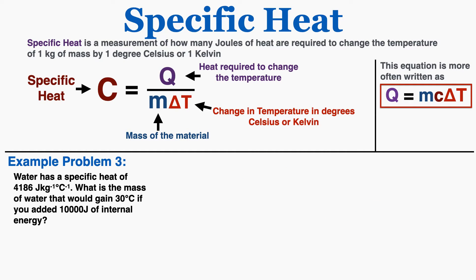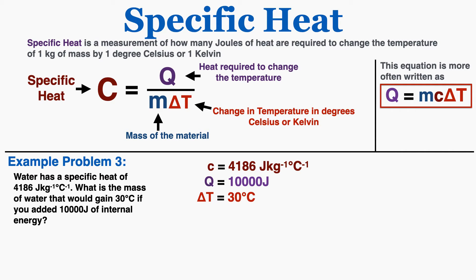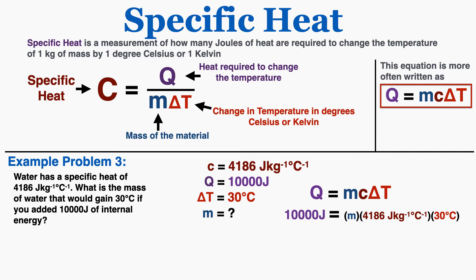In problem three, again using water: what mass of water would gain 30 degrees Celsius if you added 10,000 joules of internal energy? Remember, internal energy is the same as thermal energy, and adding it is equivalent to heat. Writing down what we know and solving for mass gives a final answer of 0.08 kilograms.